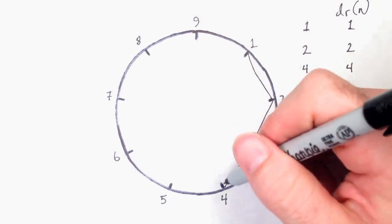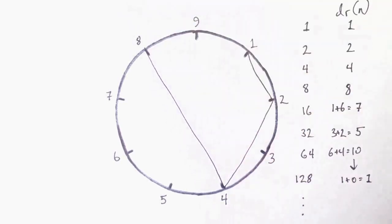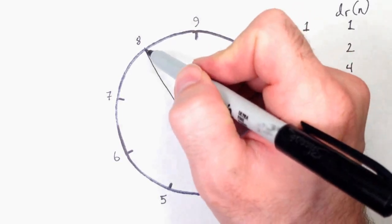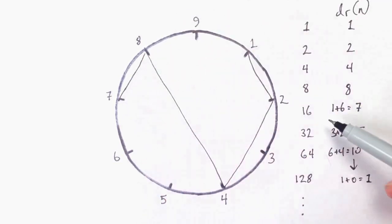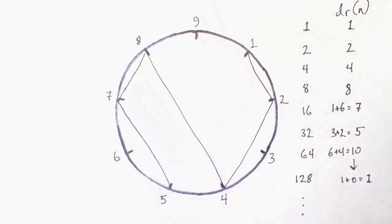Connect the digital roots as they occur in the circle. So we start at 1, go to 2, then to 4, then to 8. 16 would be the next number. However, since it's not on the circle, we need to use its digital root instead, so we connect 8 to 7. The digital root of 32 is 5, so we connect 7 to 5, and we can see this shape almost complete.